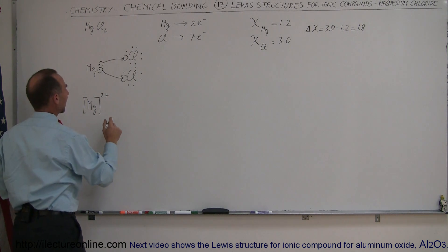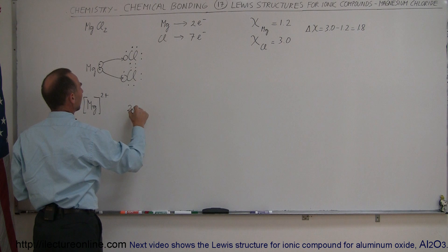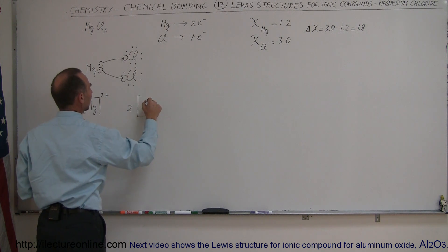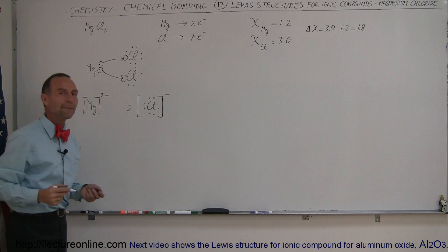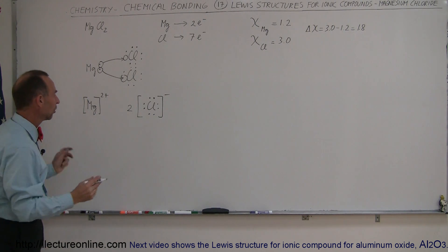And then the chlorine atoms, there's going to be two of those, and each atom is going to look like this. It has now eight valence electrons instead of seven, which means each received one additional valence electron, so that's going to be a minus charge. Of course, there's going to be two of those.